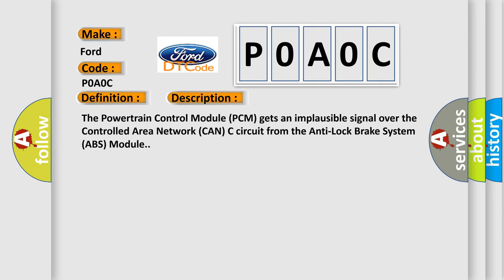The powertrain control module PCM gets an implausible signal over the controlled area network CAN-C circuit from the anti-lock brake system ABS module.